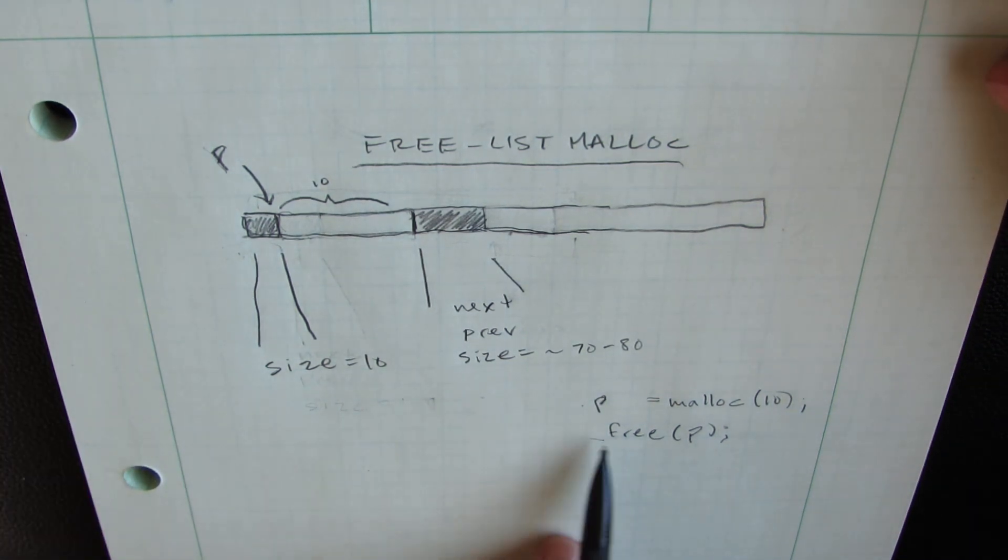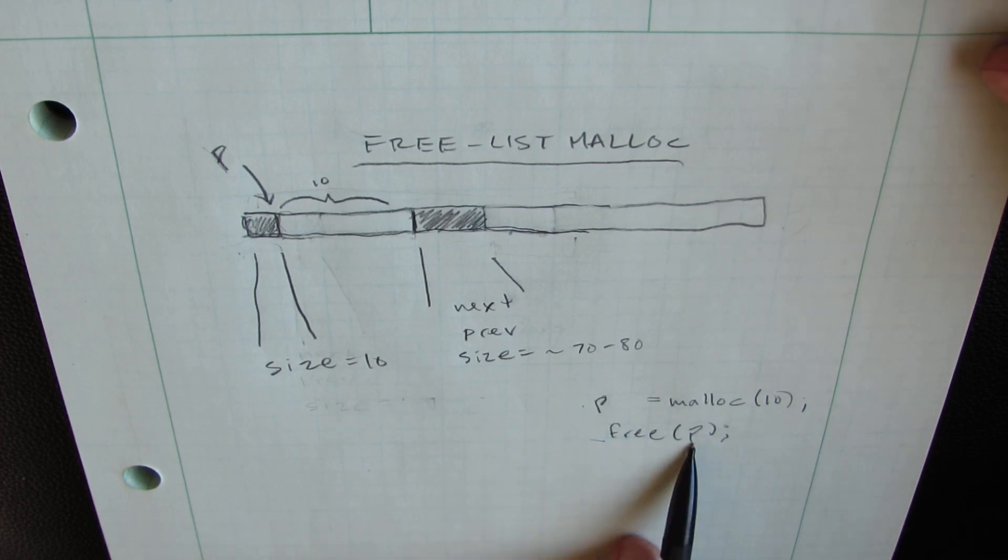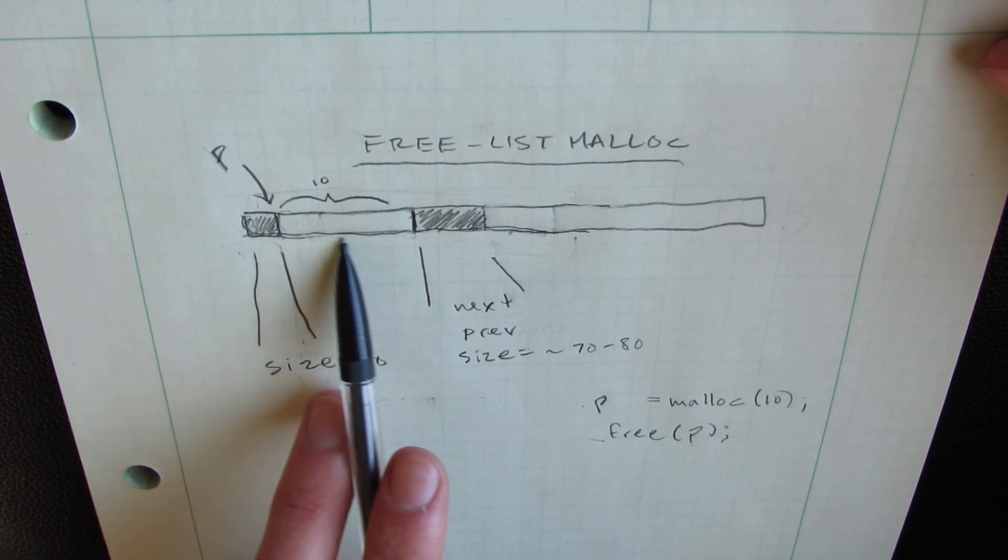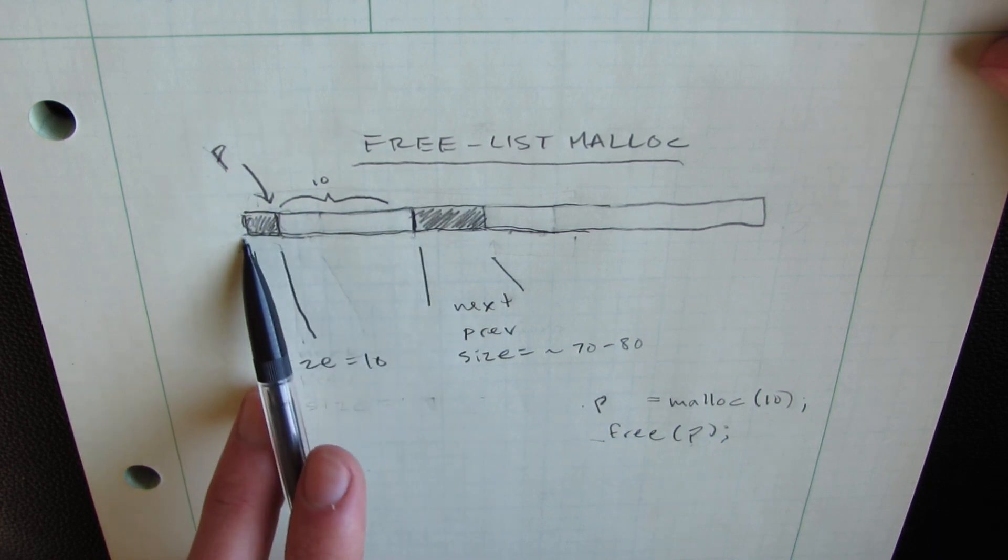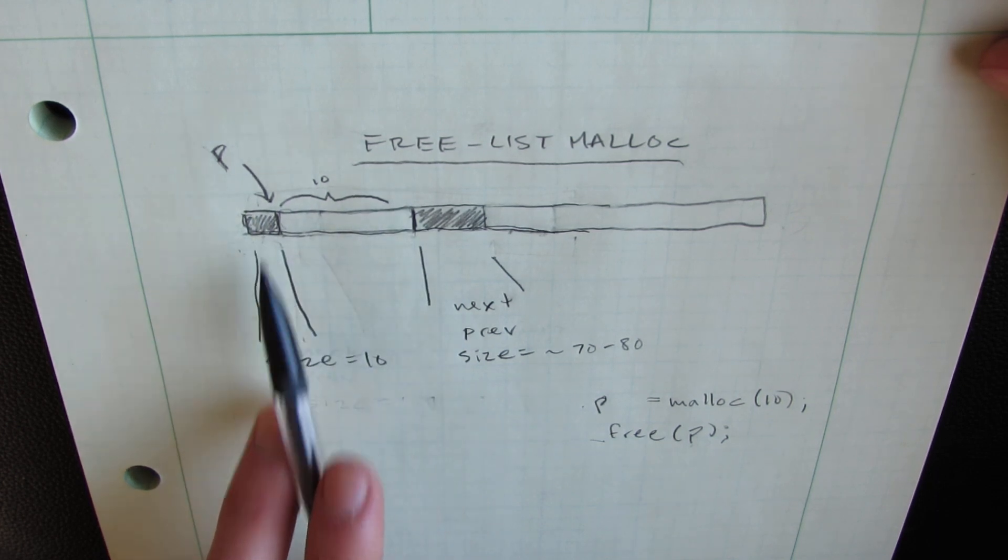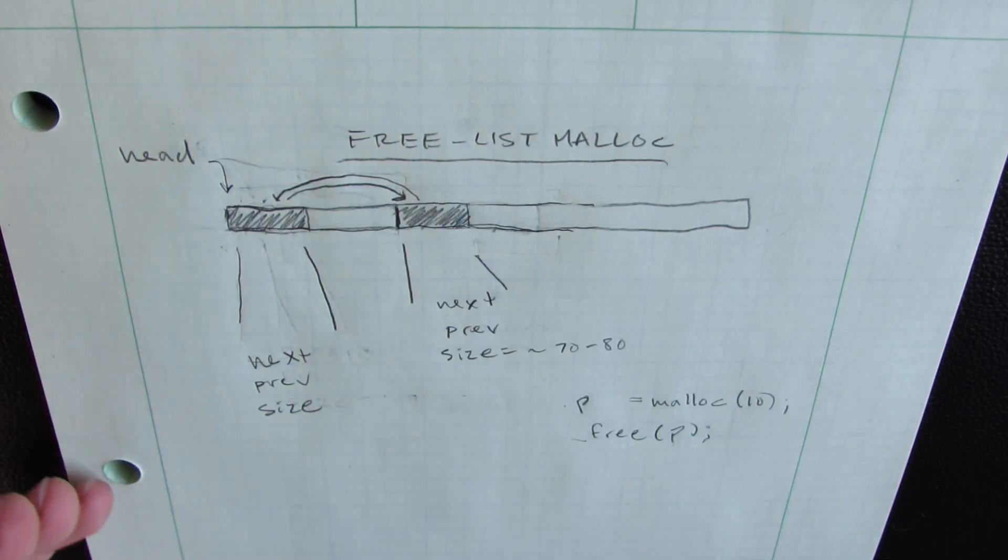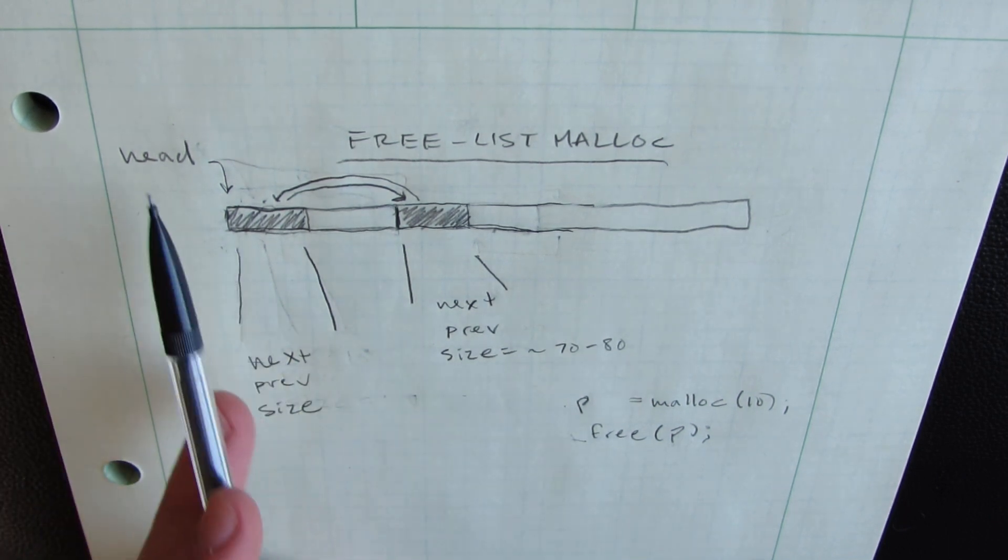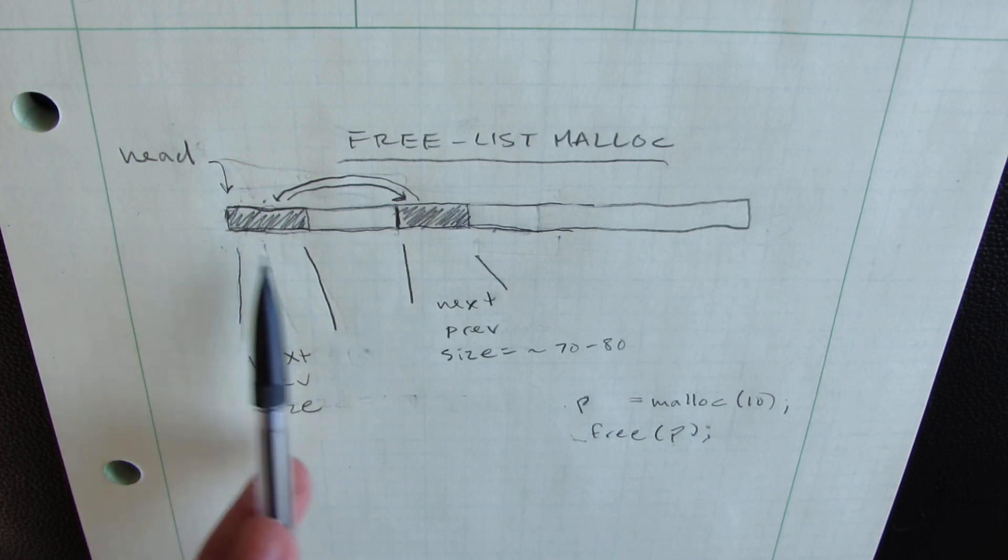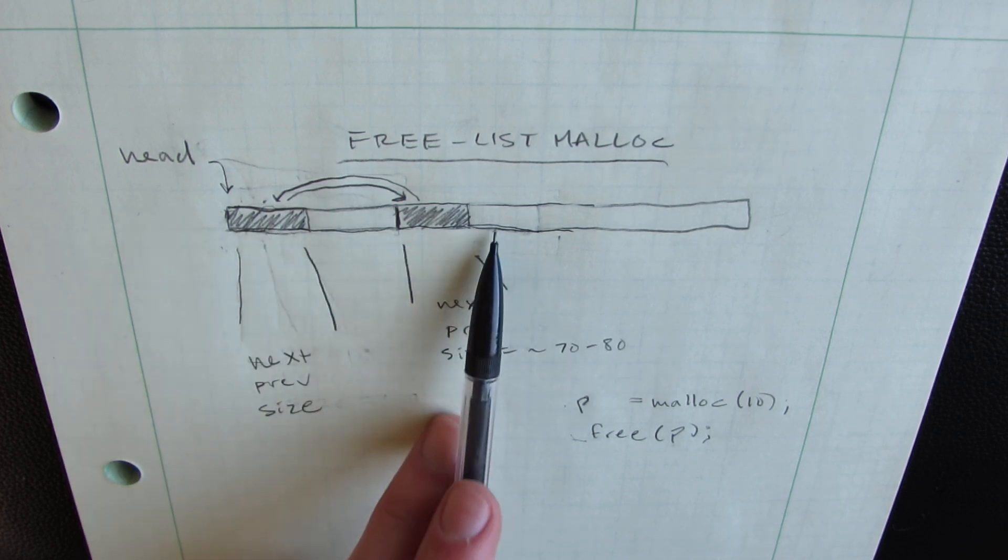So now what happens if free is called on pointer p? Well, this chunk of memory here can now be added to the free list. So what happens after we call free? Well, in this case, we now have two elements of our free list.